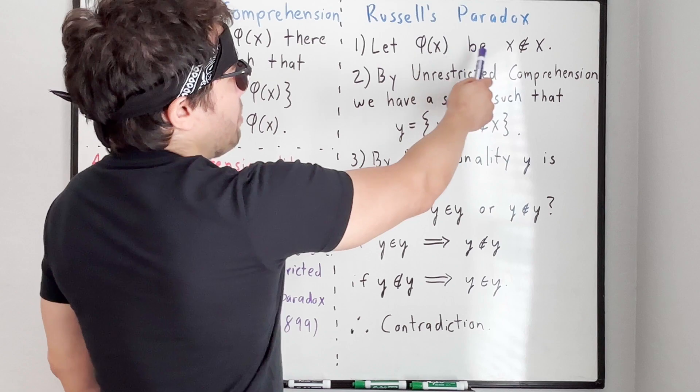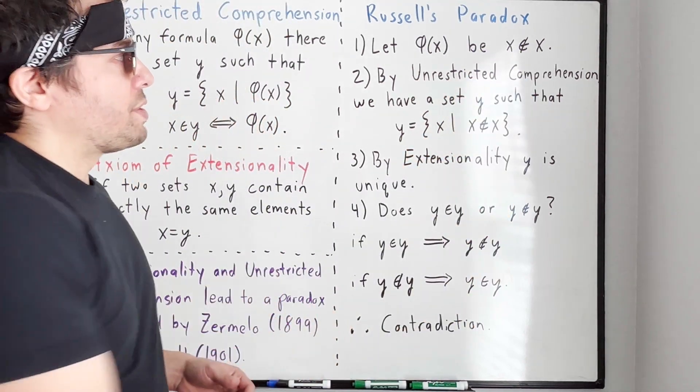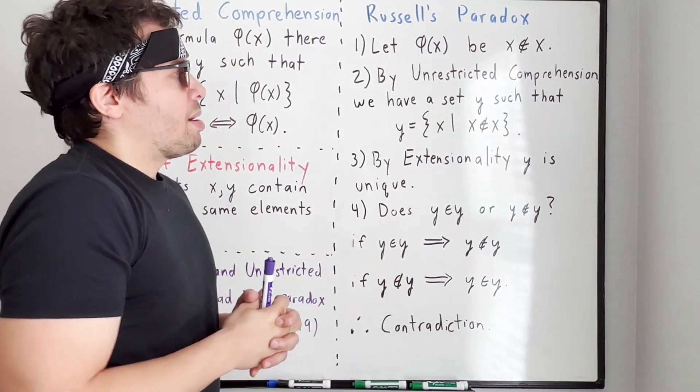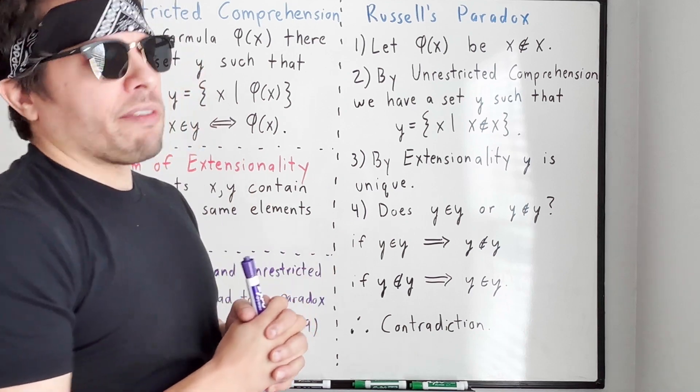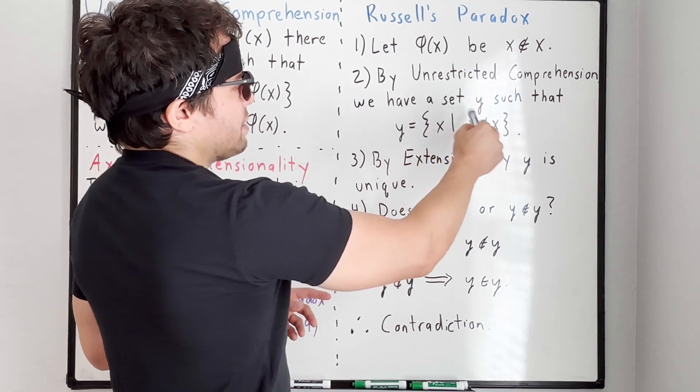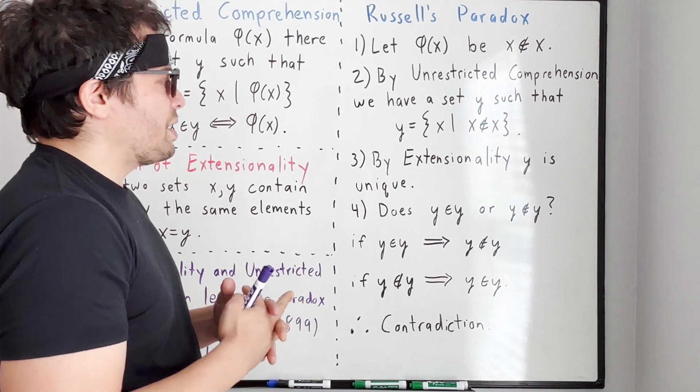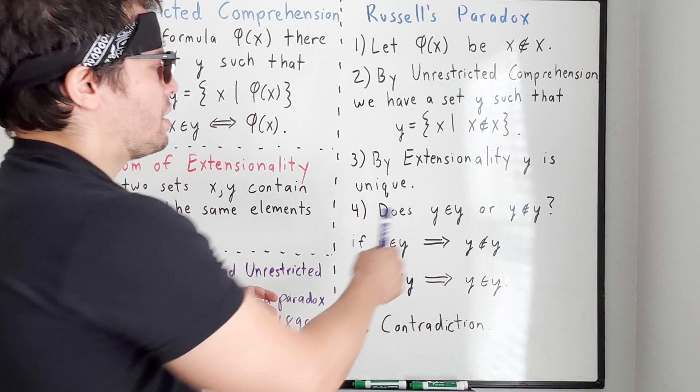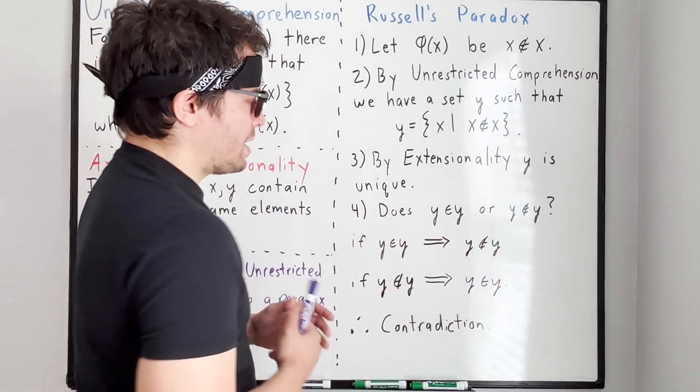So we start off, let φ(x) be the formula x is not in x. So this is a perfectly fine formula. By unrestricted comprehension, there is a set y defined by this formula. So here we have a set y defined as x such that x is not contained in x. By extensionality, y is unique. So we ask, does y contain y or does y not contain y?